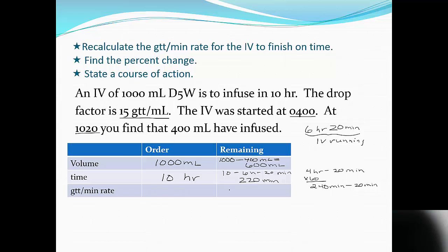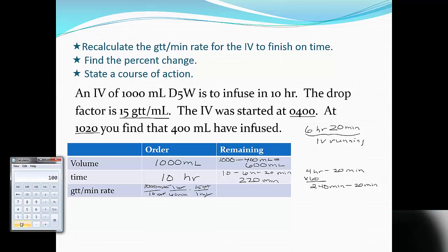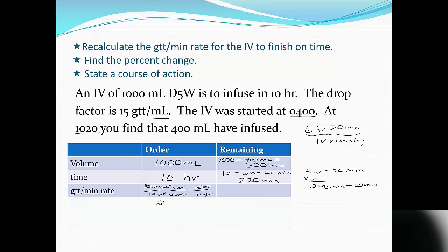In this problem, the ordered rate and remaining rate are not given, so let's start with the ordered rate. We know we're giving 1000 milliliters over 10 hours, but we want drops per minute, and 1 hour is 60 minutes. Milliliters needs to be canceled using the drop factor: 15 drops per 1 milliliter. Going to the calculator: 1000 times 15, divided by 10, divided by 60 — the original IV was set to run at 25 drops per minute.